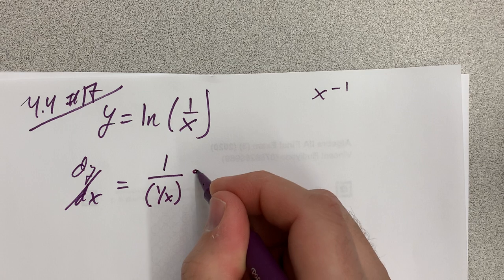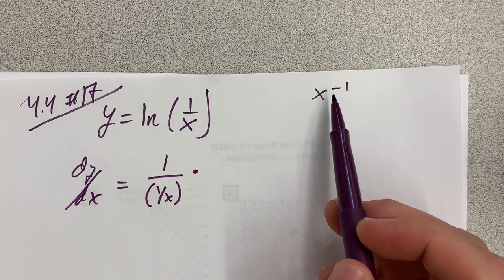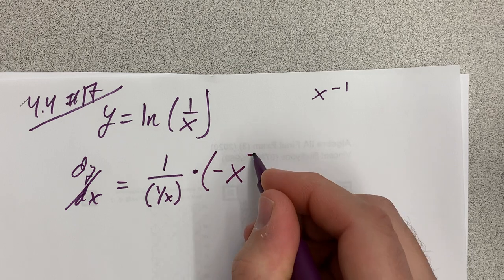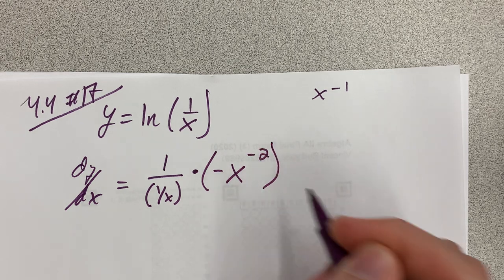And then times the derivative of 1 over x, which will be deriving x to the negative 1, so it'll be times negative x to the negative 2, subtract 1 from the power, like that.